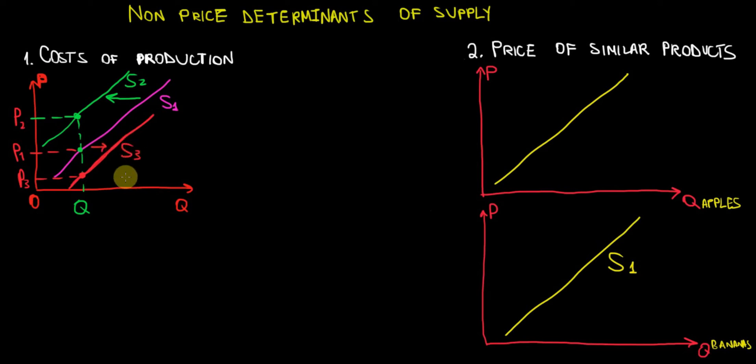Now let's draw our attention to the second factor, which would be price of similar products. Suppose that the company can produce apples and bananas with similar resources - similar labor, similar capital - it can choose between the two without reinvesting a lot of resources into the production process.